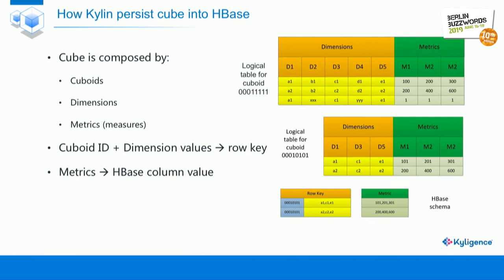How does Kylin persist the cube in HBase? A cube is composed of many cuboids, and each cuboid has its dimensions and measures. A query typically scans a certain cuboid with some dimension filters. We combine the cuboid ID together with the dimension values as the HBase row key, and put the measures — also called metrics — into HBase column values.